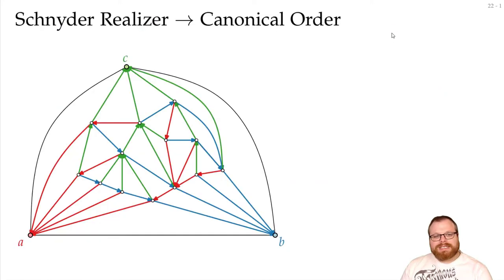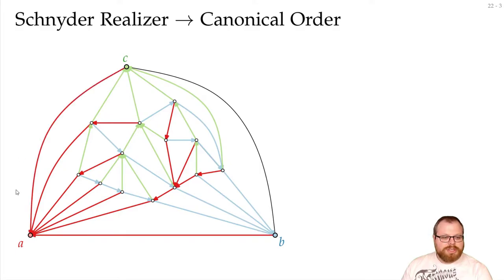In fact, if we have a Schnyder realizer, then we can extract a canonical order from it. Look at this example here. We will only look at the red tree for now, and we will add these two edges on the outer face also directed to A.